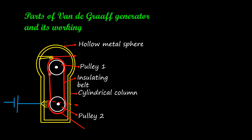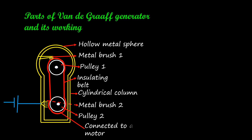The metallic brushes do not touch the belts. The brush near the upper pulley is in contact with the outer metallic hollow sphere. The lower brush is connected to the external source of current — a battery — for charging. There is a small gap between the brush and the belt where a thin layer of air is present. Pulley number two is connected to an external motor; by working this motor, the pulley can be rotated.